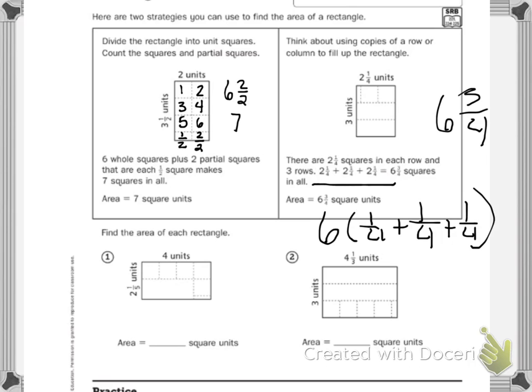So down at the bottom it says find the area for each rectangle. Let's do one together and you'll have to do the other one on your own. So I like drawing mine, so I'm going to draw. I have my four units now, one, two, three, four, and then I'm going to have my two and then it's one fifth.